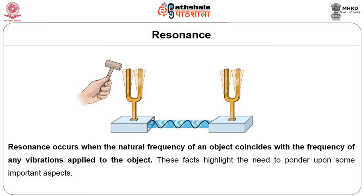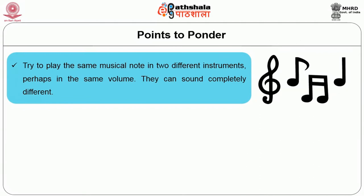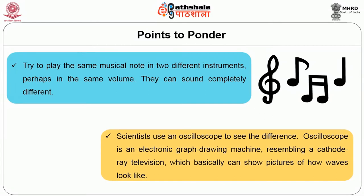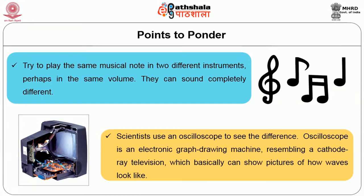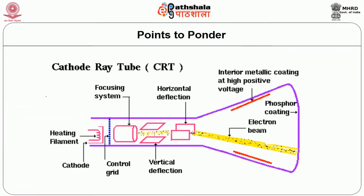These facts highlight the need to ponder upon some important aspects. Try to play the same musical note in two different instruments at perhaps the same volume — they can sound completely different. How can that be if they are producing the same sound waves? It is quite obvious they are not producing the same sound waves. Scientists use an oscilloscope to see the difference. An oscilloscope is an electronic graph drawing machine resembling a cathode ray television, which basically can show pictures of how waves look like. The illustration shows the interior of a cathode ray tube for use in an oscilloscope. The graphs differ — they are different in their wave shapes.